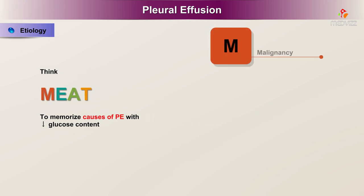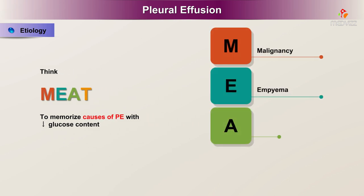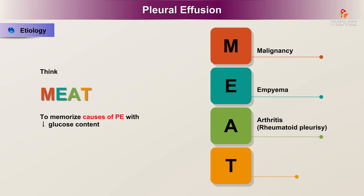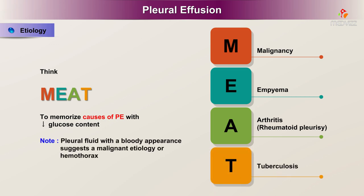Think MEAT to memorize causes of pleural effusion with decreased glucose content: M for malignancy, E for empyema, A for arthritis or rheumatoid pleurisy, and T for tuberculosis. Note that pleural fluid with a bloody appearance suggests a malignant etiology or hemothorax.